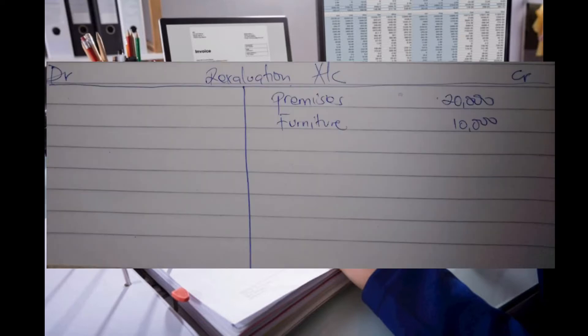Next we look at furniture. They told us furniture was revalued from 80k to 90k, so it increased in value by 10k. Furniture is also a non-current asset, and in case of an increase in the value of assets, we debit the individual asset account and credit the revaluation account. So we credit the revaluation account with furniture of 10,000 because it increased in value by 10,000.